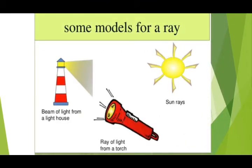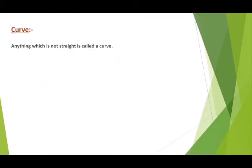Some examples of a ray are: a beam of light from a lighthouse, a ray of light from a torch, and sun rays. A curve means anything which is not straight is called a curve.